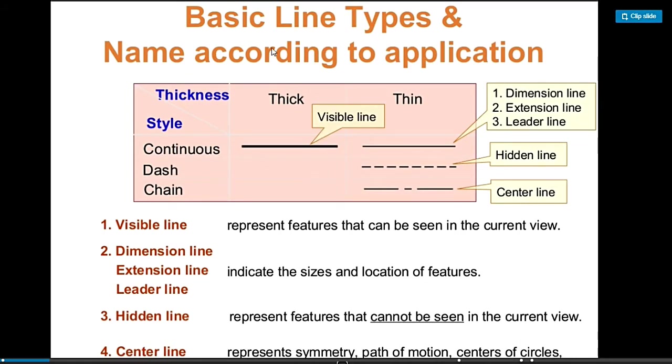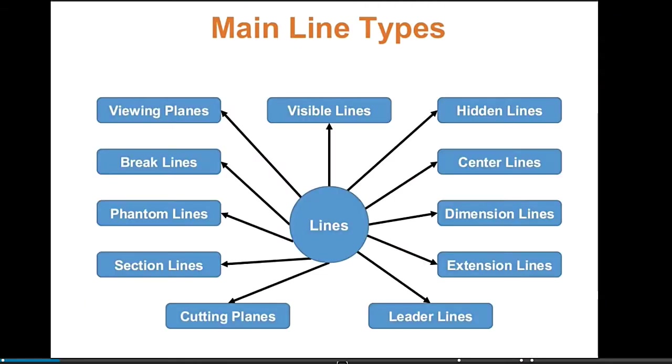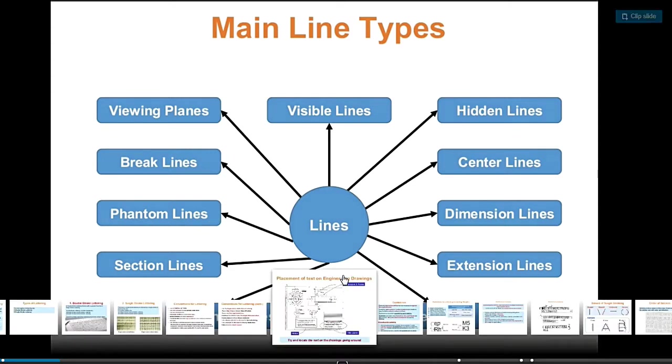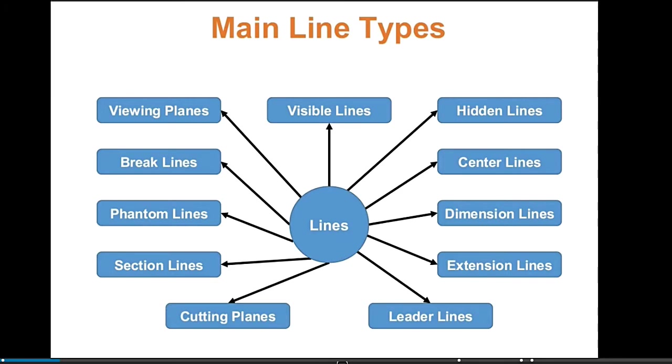These are the basic line types that are easy to understand. The visible line is thick. Dash line is for invisible or hidden lines, and center line looks like a chain. The thin line is used as dimension line, extension line, and leader line, while the invisible or hidden line is the dash.